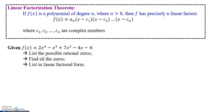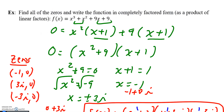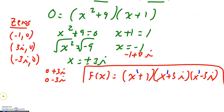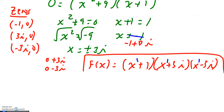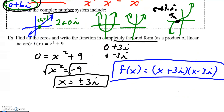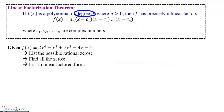Linear factorization theorem: in so many words, this says that if you have a polynomial of a certain degree, that's how many linear factors you're going to have. In the previous example, I had something of degree three and I had three linear factors. In the example before that, I had a degree of two and I had two linear factors. So the theorem says that's how many linear factors you'll really have.